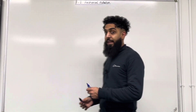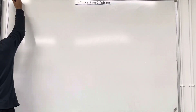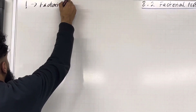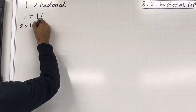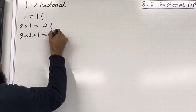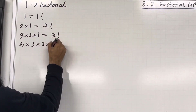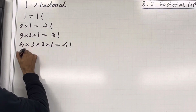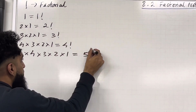Let's have a look at the facts of this section. Firstly, the exclamation mark represents factorial. 1 can be written as 1 factorial. 2 times 1 can be written as 2 factorial. 3 times 2 times 1 can be written as 3 factorial. 4 times 3 times 2 times 1 can be written as 4 factorial.